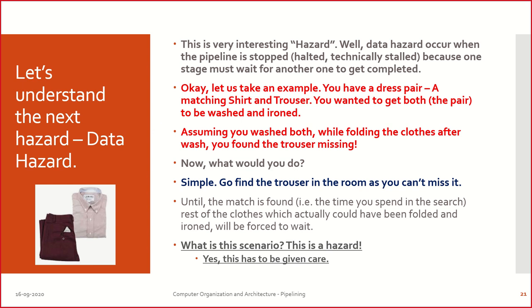I am taking a pair of matching trouser and shirt as an example. I wanted to get both washed, dried, and ironed. I have washed both and I'm folding them for ironing, but I see the trouser is missing. The shirt is washed and on the table for pressing, but the trouser is not found. So I will have to search — check the washroom, see if somebody mistakenly took it.